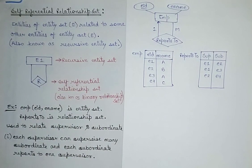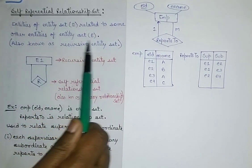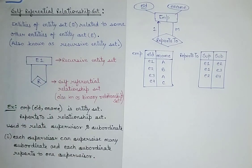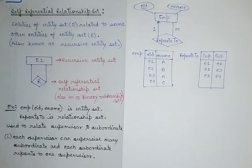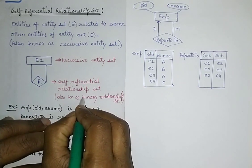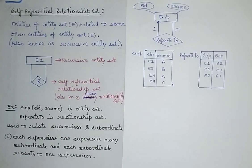So what is a self-referential relationship set? The name itself suggests that if a particular entity is relating with itself — that means if a relation is taking both entities from the same particular table — then it is known as a self-referential relationship set. If entities of entity set E are related to some other entities of the same set E, it is also known as a recursive entity set. It can be represented as a diagram where the entity relates to itself. This is also known as a unary relationship set.